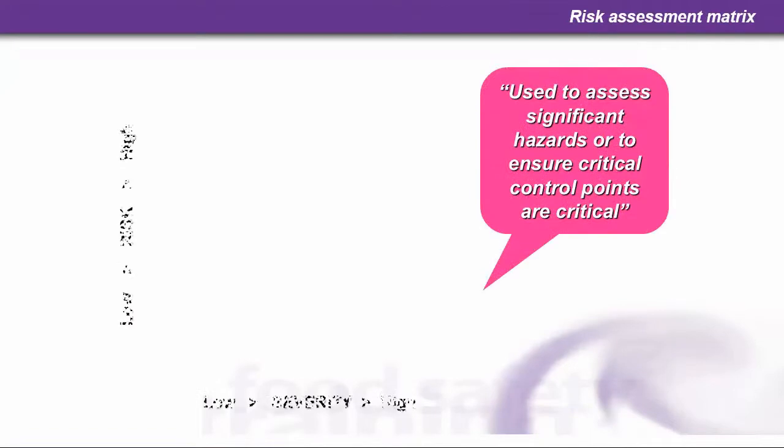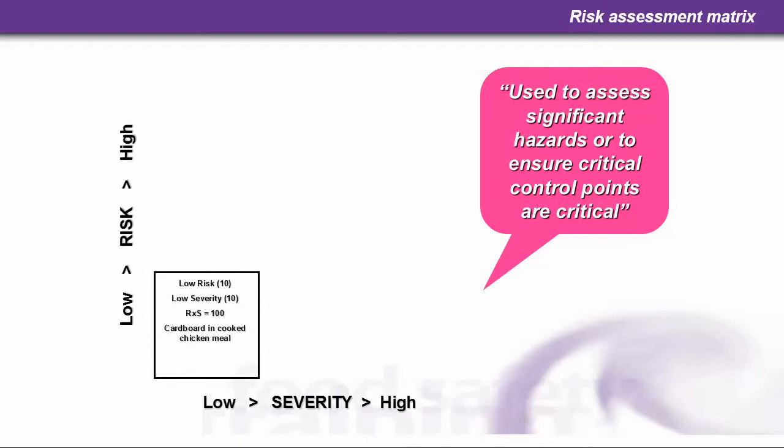A risk assessment matrix is used to assess significant hazards and to ensure critical control points are critical. You're looking at risk versus severity. For example, using the matrix with cardboard in a cooked chicken meal — we give it a score of 10 because it's a low risk. Cardboard in cooked chicken is not likely, and the severity if it does occur is not likely to cause much harm. We multiply risk by severity to give a total score of 100.